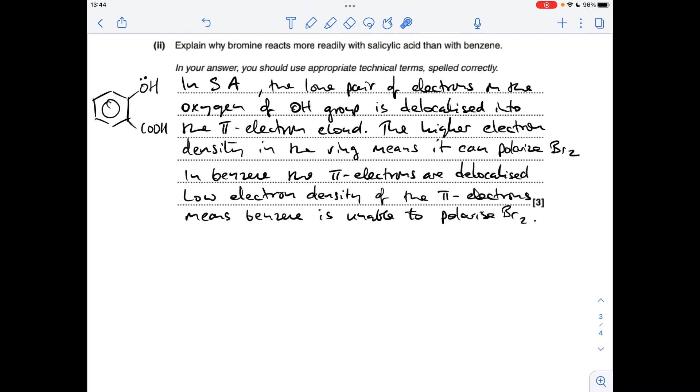Moving on to the comparison of the reactions of salicylic acid and benzene with bromine. So in salicylic acid you've got a lone pair of electrons on the oxygen of the OH group. They become delocalised and part of the pi electron cloud. That gives the pi electron cloud a higher electron density, which means it can polarise the bromine molecule and therefore attract it more readily.